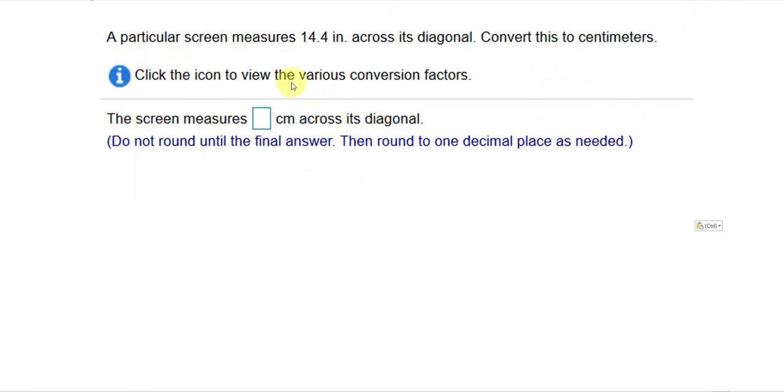And then this is question number 11 from section 1.4. A particular screen measures 14.4 inches across its diagonal. Convert this to centimeter. So we have 14.4 inches. And you want to convert it to centimeter. So inches, you want at the end, you want that to be centimeter.